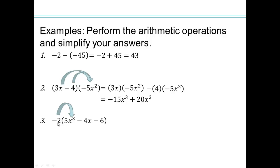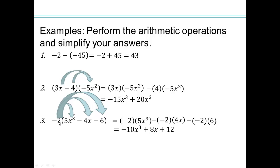Again, distributive property of multiplication over subtraction. Negative 2 times 5x cubed, and then subtract negative 2 times 4x, and then subtract negative 2 times 6. Multiplying together: negative 2 times 5 is 10, so 10x cubed. Negative 2 times 4 is negative 8, and the negative of that gives me 8x because of the additive inverse. And here we want to add the inverse of negative 12, which is positive 12.